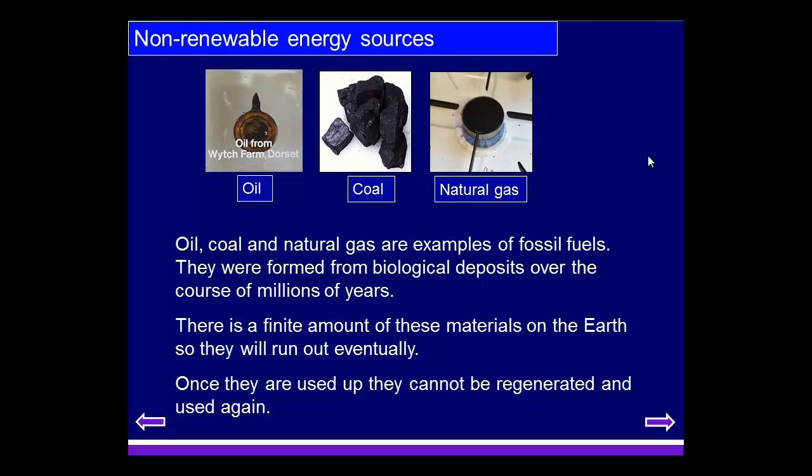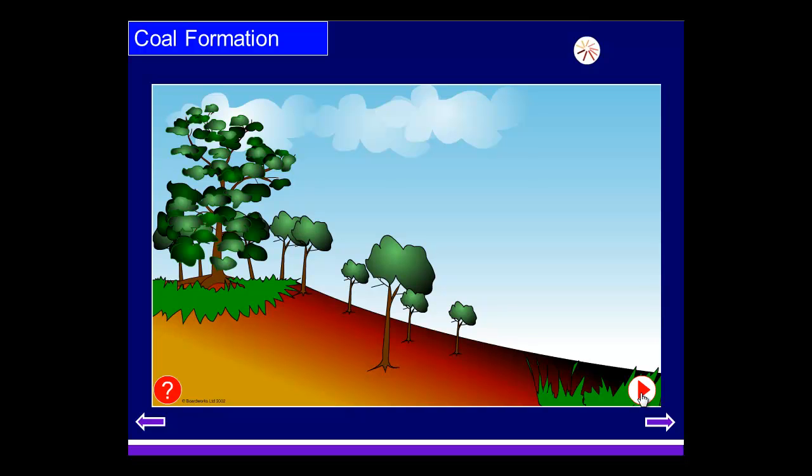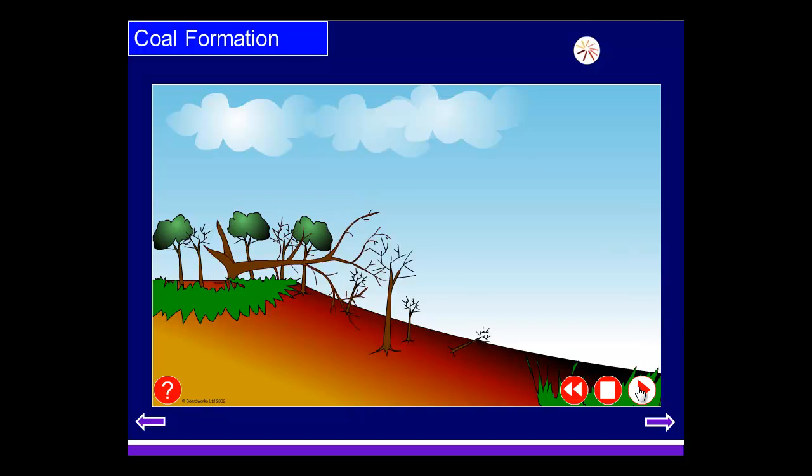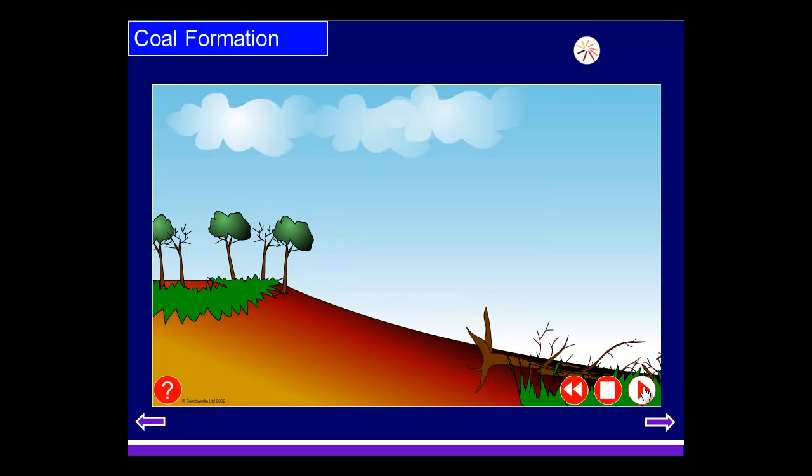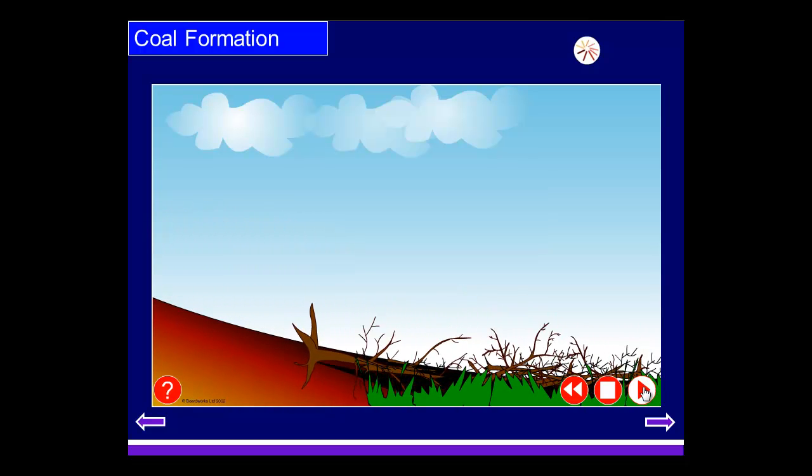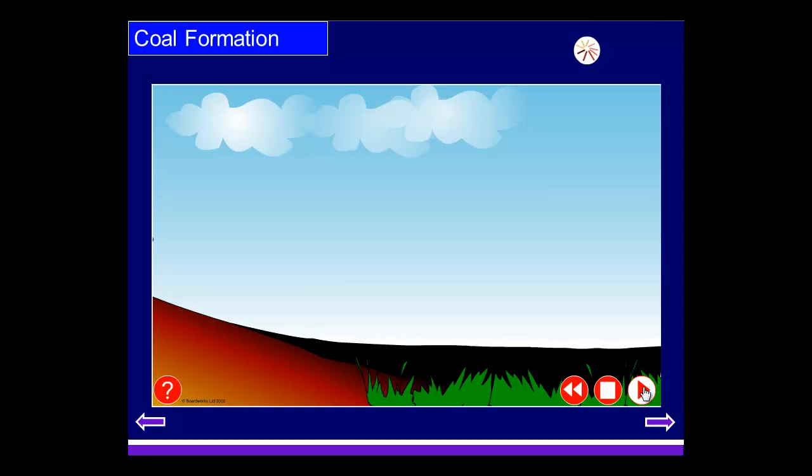Coal formation begins about 300 million years ago, where we have plants photosynthesizing and therefore storing the sun's energy within themselves. Life goes on, seasons continue, and eventually these plants get knocked down and the dead plants often fall into swampy water. This swampy water sets up the perfect situation where the mud stops any bacteria getting to these plants and causes them not to rot away.